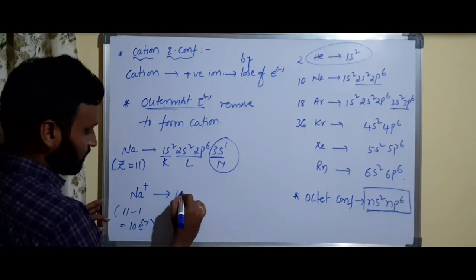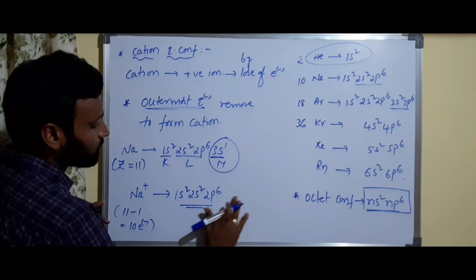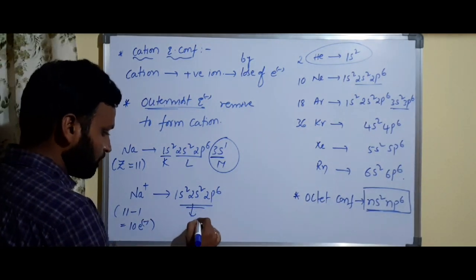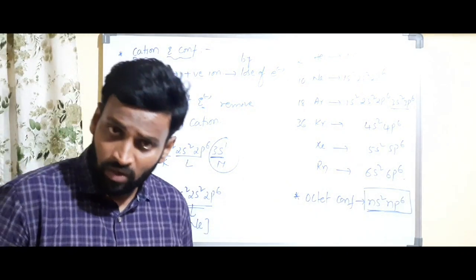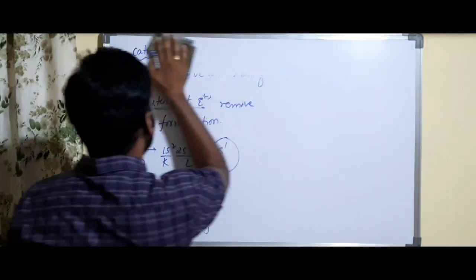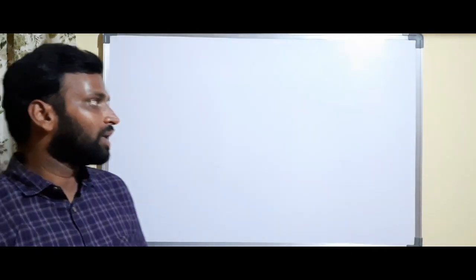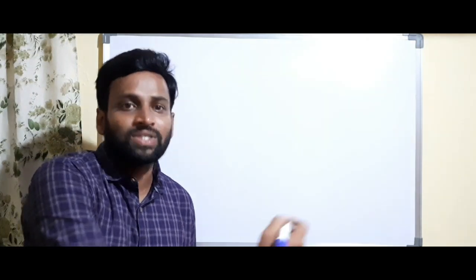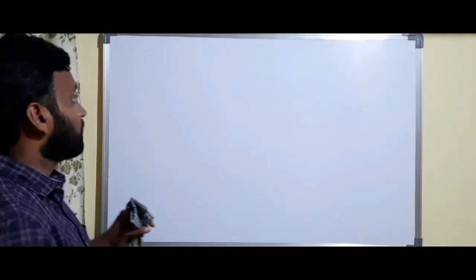So Na⁺ configuration is 1s², 2s², 2p⁶ — that's it, with 3s⁰. Atoms that have up to 3 extra electrons beyond a noble gas configuration will lose electrons. Those with up to 3 electrons fewer than octet configuration will gain electrons. For a carbon-like element with 2s², 2p² — 4 electrons in the outermost — it would need to gain or lose 4 electrons, which is not at all possible. So carbon neither loses 4 electrons nor gains 4 electrons.